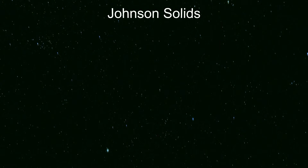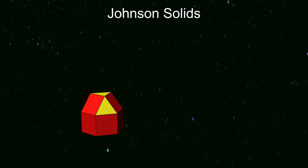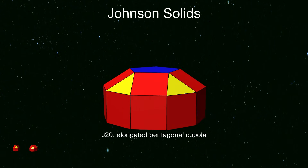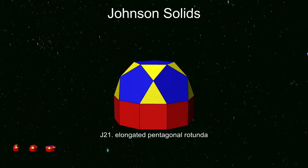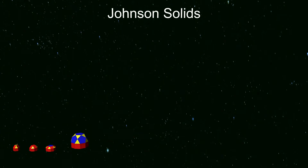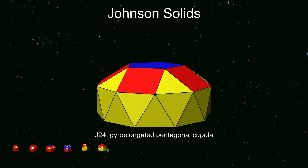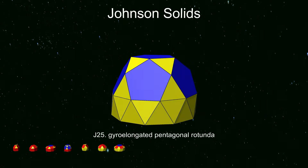We can do similar things with the cupolas and rotunda. We have three elongated cupolas, the elongated pentagonal rotunda, three gyro-elongated cupolas, and the gyro-elongated rotunda.